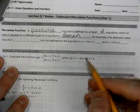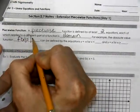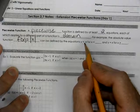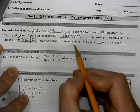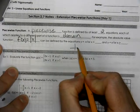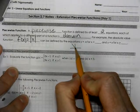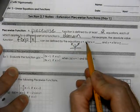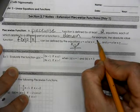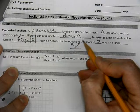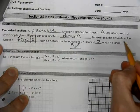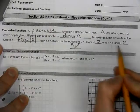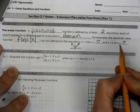For example, the absolute value function, known as f of x equals the absolute value, can be defined by the equations y equals negative x. The absolute value graph is a v-shape. So it's y equals negative x whenever x is less than zero, and y equals positive x whenever x is greater than or equal to zero. Only one of the two functions can have the equal-to-zero condition.